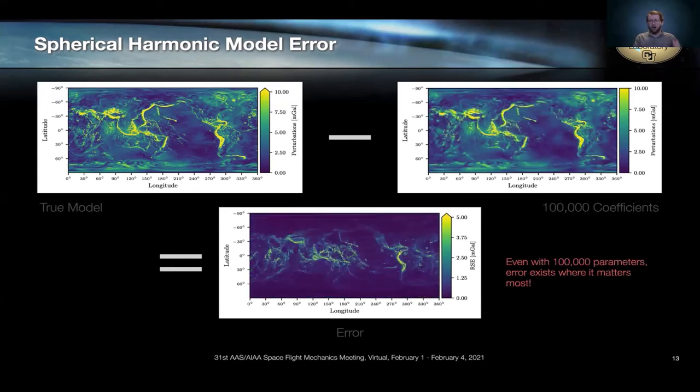So we go up to 100,000 coefficients. And at this point, the maps look pretty close to the same. But when you look at their error, the place where they suffer most are in these dominant perturbations. And just to stress this point one more time, these are the next most important things to model as a dynamicist after J2.